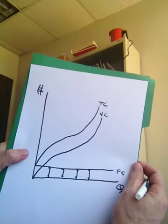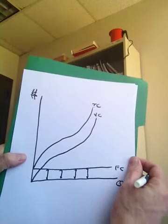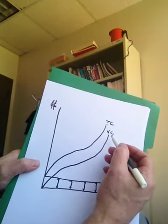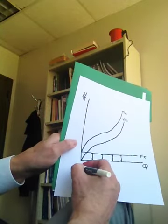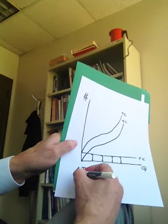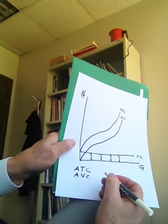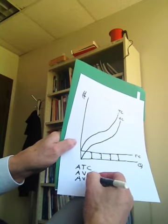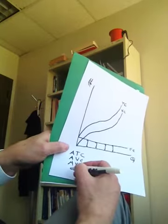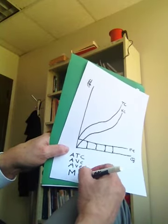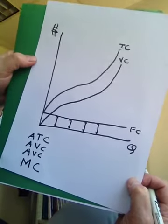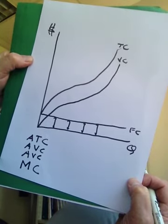Interestingly, these are not precisely the curves we are going to use in our analysis. Instead of using total costs, variable costs, and fixed costs, we're going to use average total costs, average variable costs, average fixed costs, and — as you may have guessed — marginal costs. So let's do a video right now on what the marginal cost curve will look like. Stay tuned.